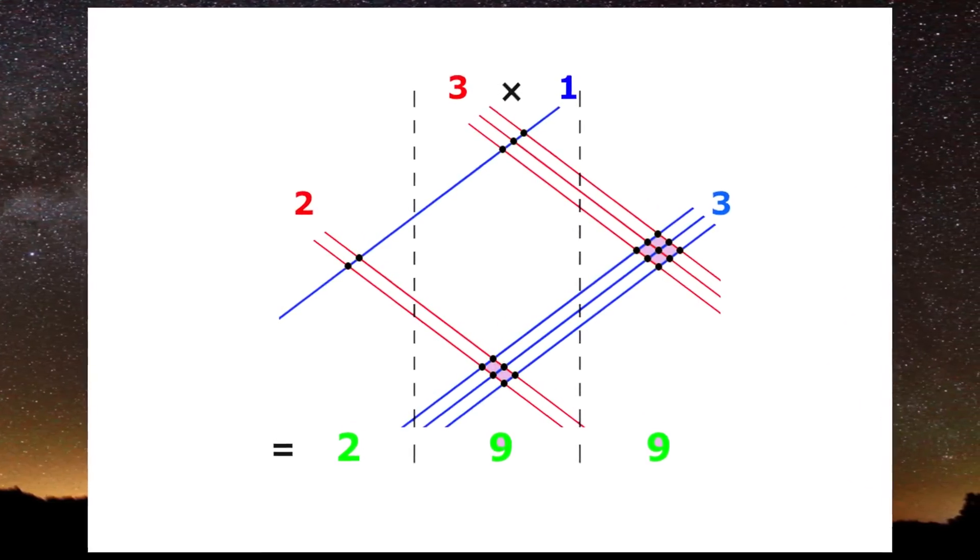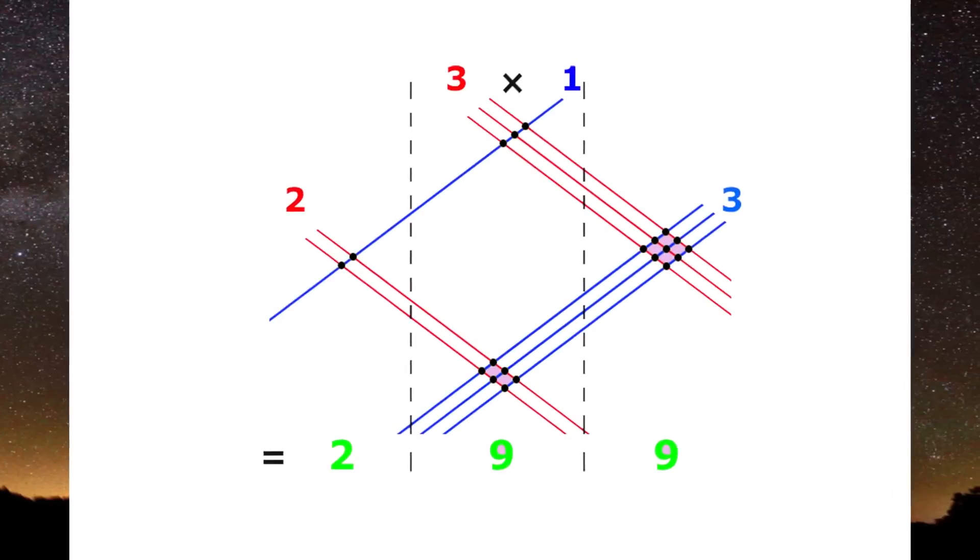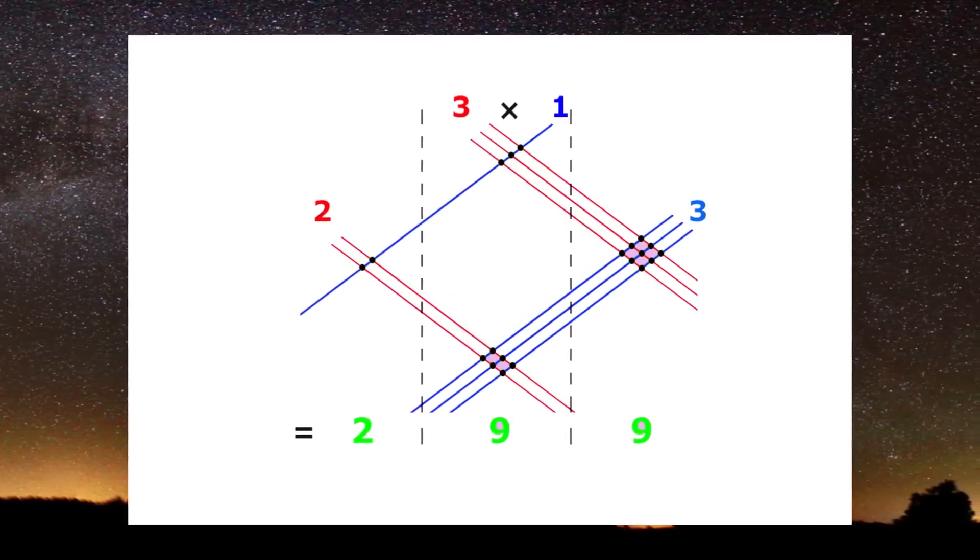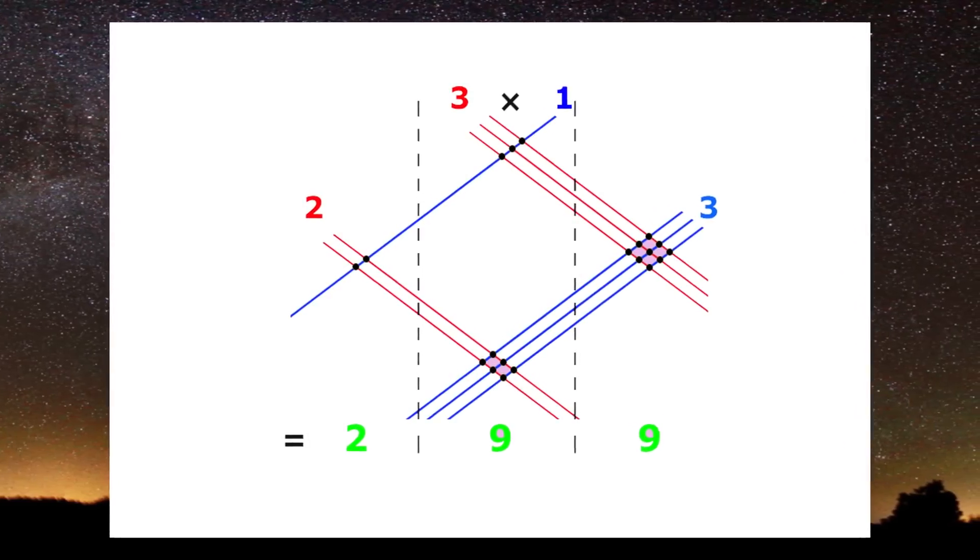Where the lines intersect, you need to count them in columns. When you have the numbers, you'd read them from right to left, making the answer 992. It might sound complicated, but it's easier than doing the actual math.